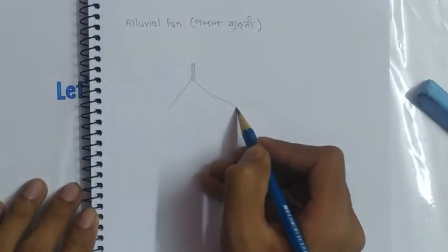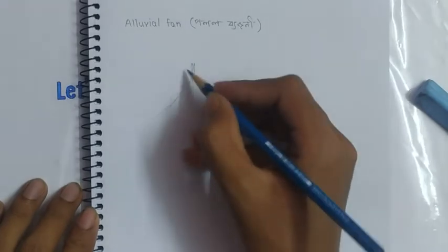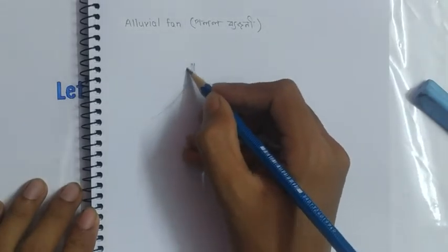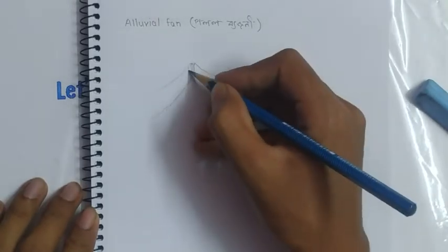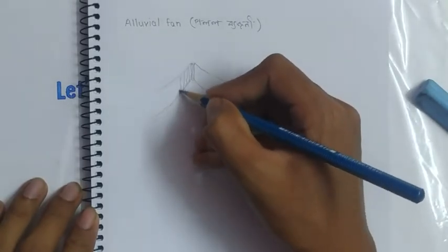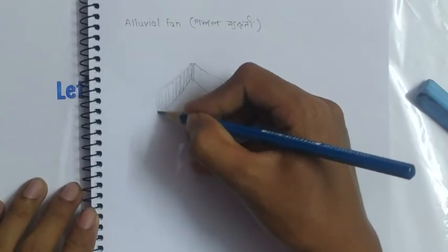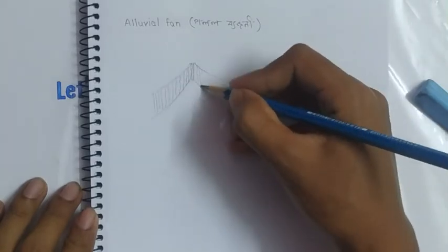And then draw another line here and here. Now make some shades on this and here too.